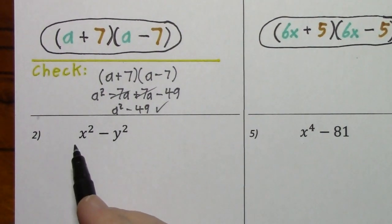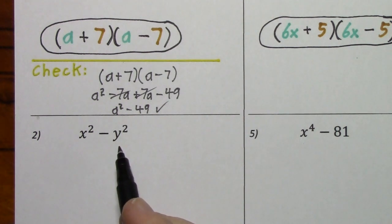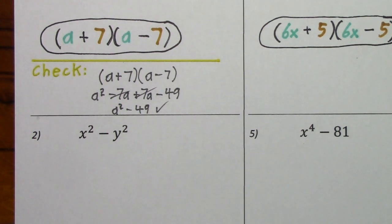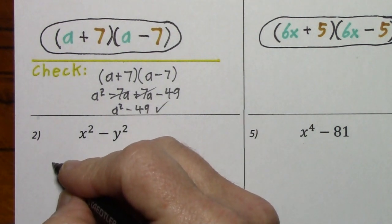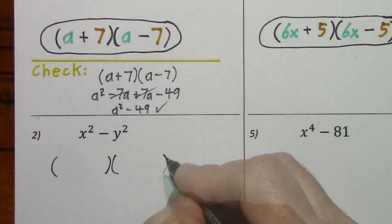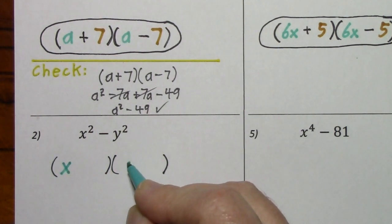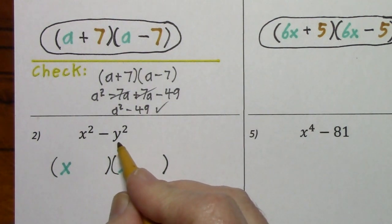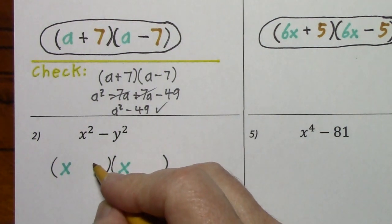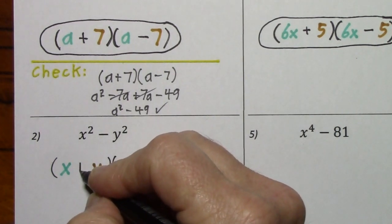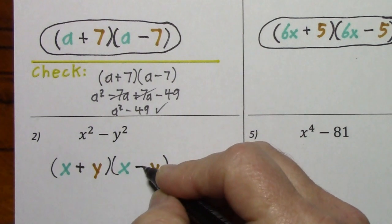Looking at number 2: there's no GCF other than 1. Do we have two terms? Yes. Is this a difference of perfect squares? Yes. So we can factor without having to write anything except the answer. The square root of x squared is x, and the square root of y squared is y. You put one plus and one minus.